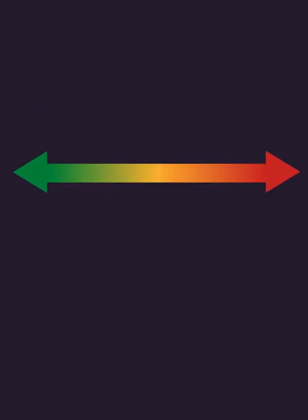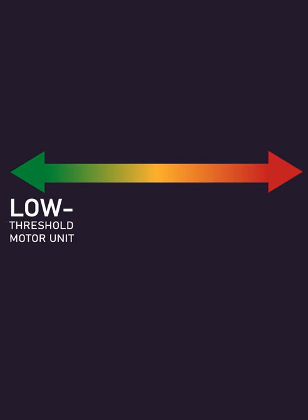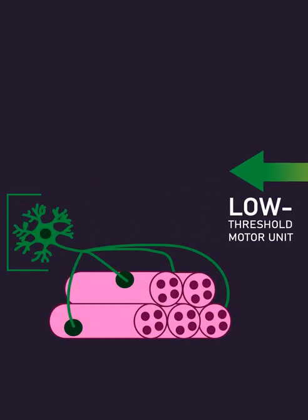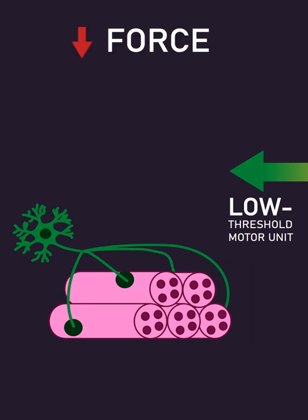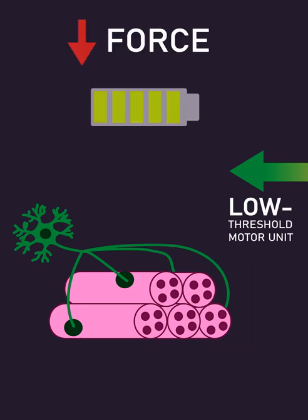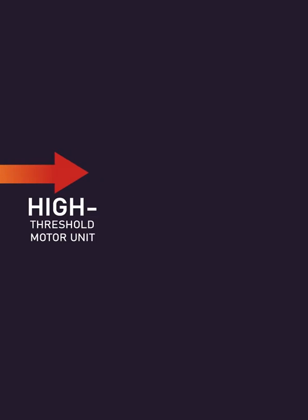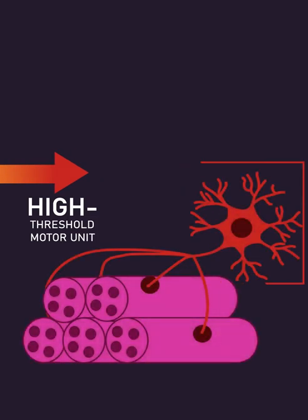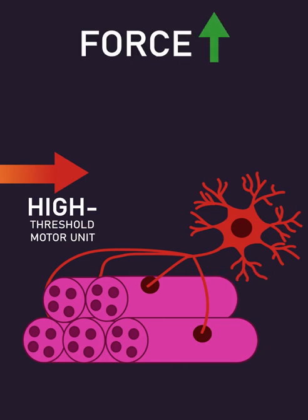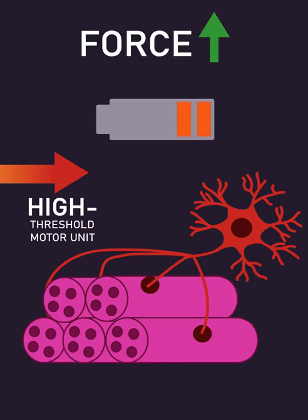The characteristics of motor units lie across a spectrum. On one end are low-threshold units consisting of a small motor neuron supplying slow-twitch muscle fibers that produce low forces but are highly fatigue-resistant. On the other end are high-threshold units consisting of a large motor neuron supplying fast-twitch muscle fibers that produce high forces but are very fatigable.